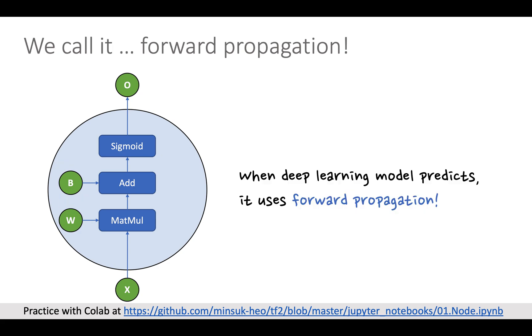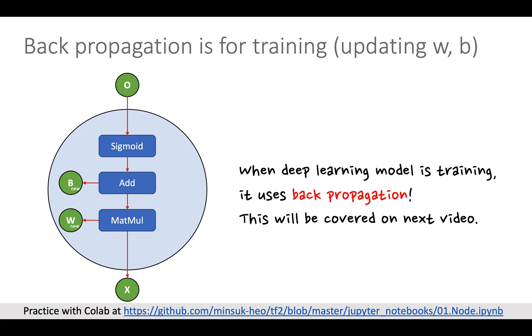When deep learning predicts, it just flows from the input to output. We call it forward propagation. When deep learning training, there is another step called backpropagation. It basically updates variables in the deep learning model. I will explain it in the next video.